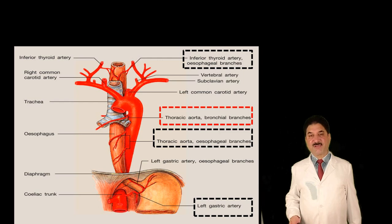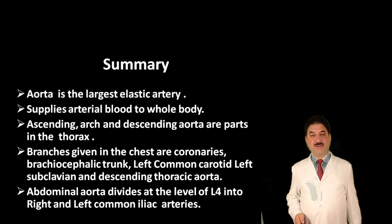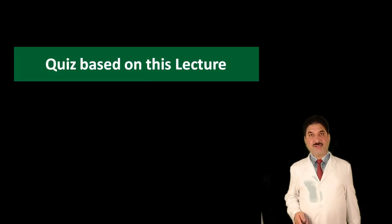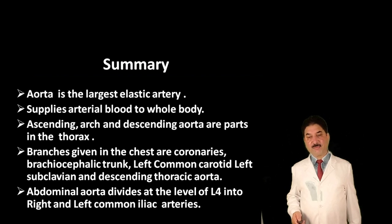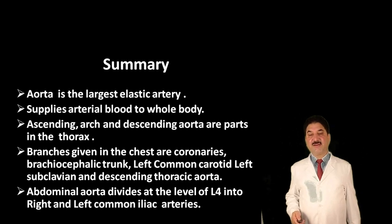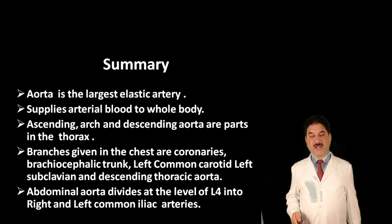To summarize: the aorta is the largest elastic artery of the body. It supplies arterial blood to the whole body including the heart through coronary arteries. Its parts are the ascending aorta, arch, and descending aorta. Branches given in the chest are the coronaries, brachiocephalic trunk, left common carotid, left subclavian, and branches of the descending thoracic aorta. Abdominal aorta divides at the level of L4 into right and left common iliac arteries.